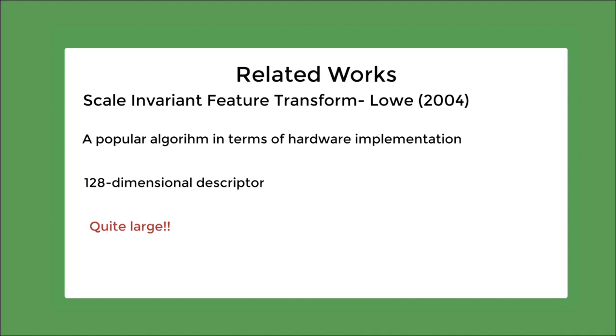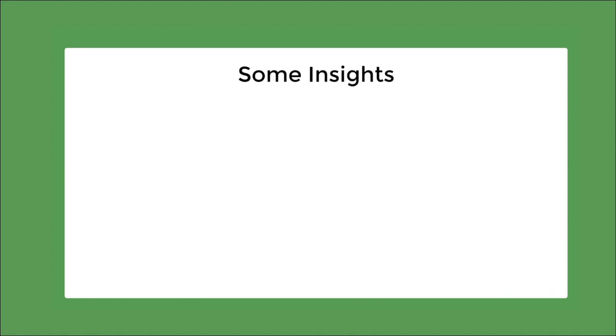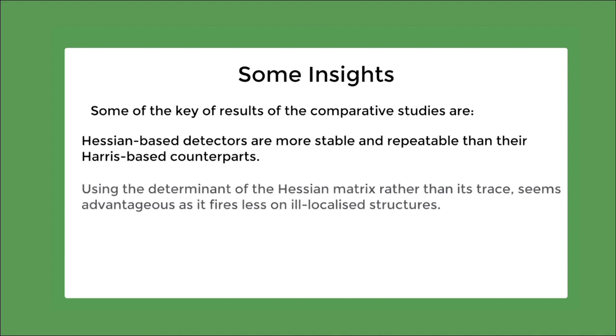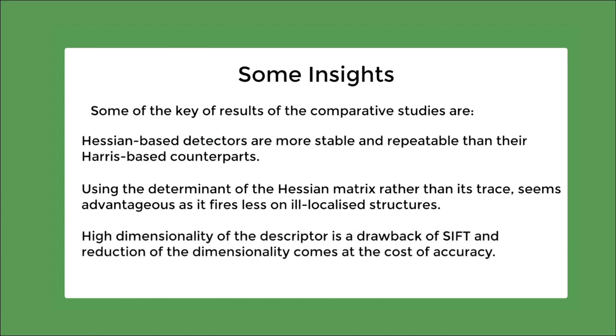Before we go on to the methodology, there were several comparative studies of the existing method which helped in the development of SURF. Some of the key results are, Hessian-based detectors are more stable than the Harris-based counterparts. Using the determinants of a Hessian matrix seems to be more advantageous than rather than its trace, as it fires less on ill-localized structure. And as discussed earlier, the high dimensionality of SIFT's descriptor is its drawback, and deduction of dimensionality comes at the cost of accuracy.